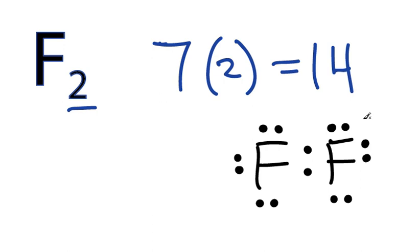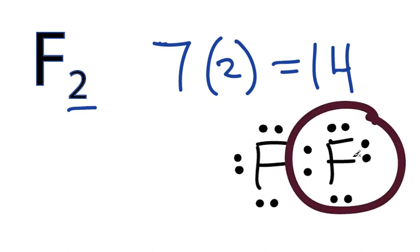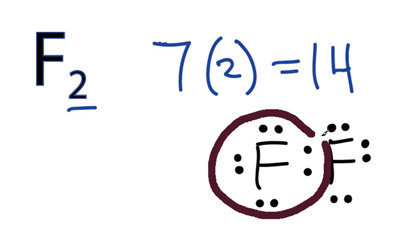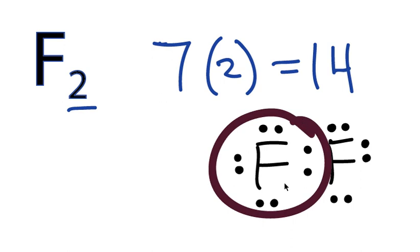and let's see if we have octets. 2, 4, 6, 8. That Fluorine has 8. And over here, 2, 4, 6, 8. That Fluorine has 8 as well. So we're actually done with the dot structure for F2.